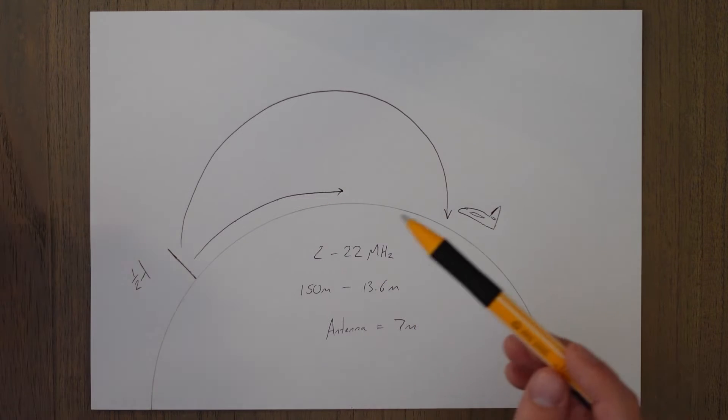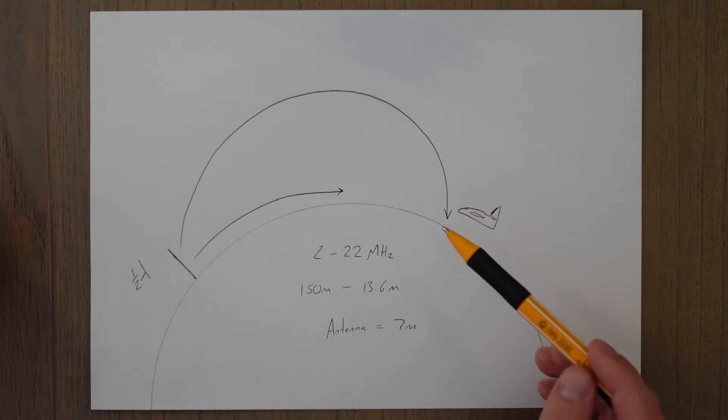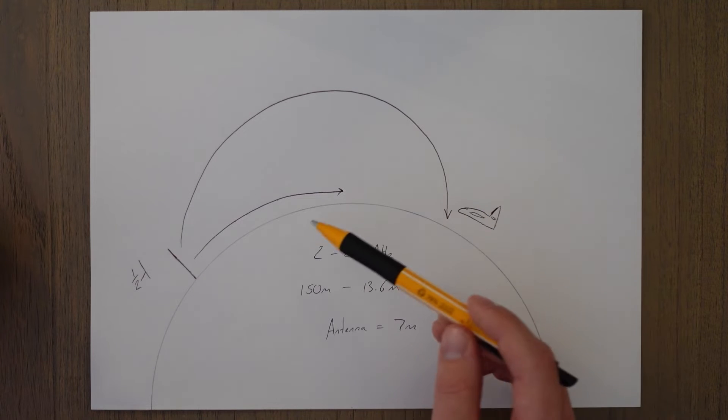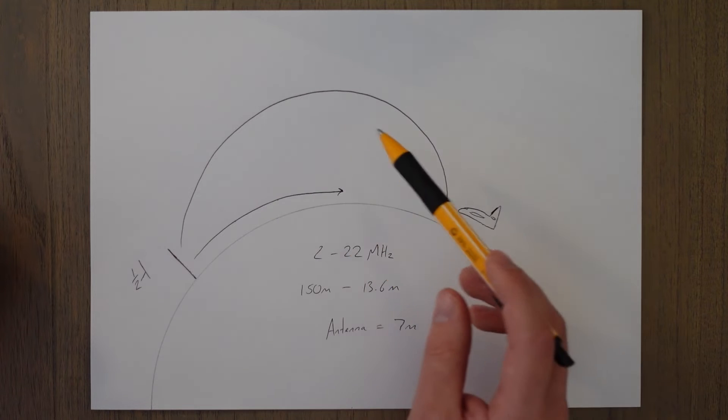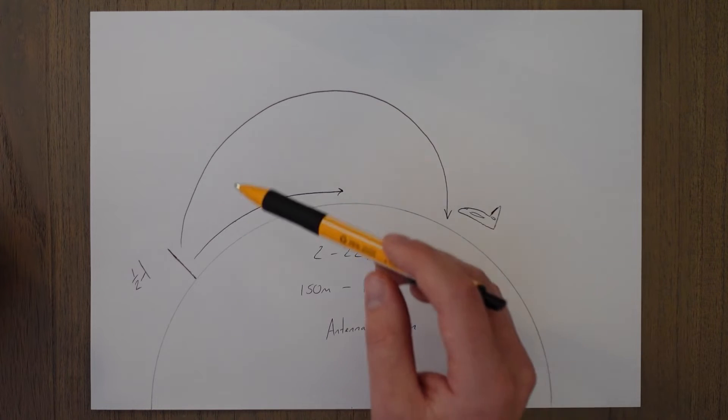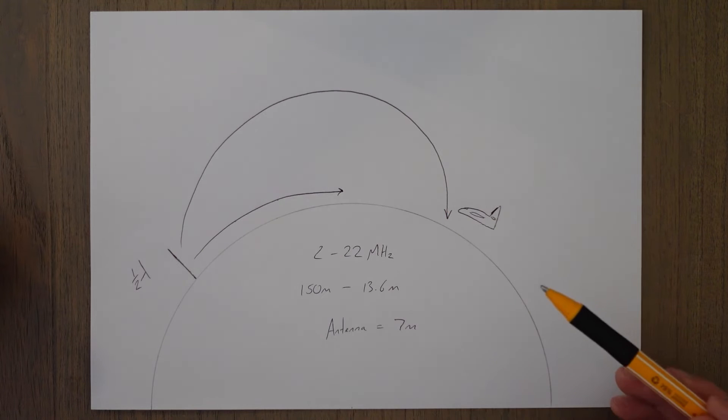So it's a fine balance between range and clarity of signal in the high frequency communication world. And often controllers will have a range of frequency they use, and they will change over the course of the day as the characteristics of the ionosphere and the returning skywaves change as well.